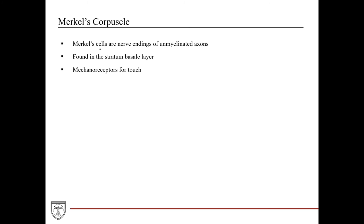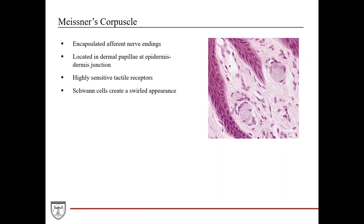Merkel's corpuscles are nerve endings of unmyelinated axons found in the stratum basale layer of the epidermis — these are mechanoreceptors for touch, very superficially located. Meissner's corpuscles are encapsulated afferent nerve endings located in the dermal papillae of the epidermis-dermis junction. In the histological image, the epidermal ridges and dermal papillae can be identified, and the Meissner's corpuscle can be recognized by its location at that junction.